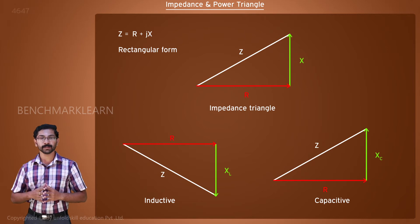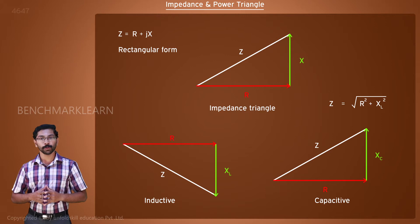By Pythagoras theorem, we can write Z equal to square root of R square plus XL square.